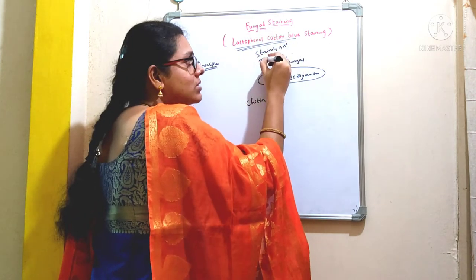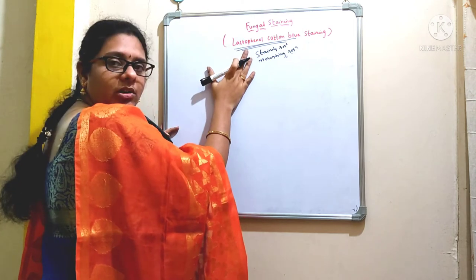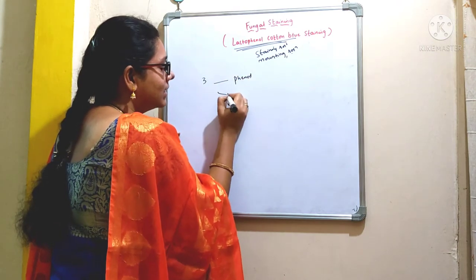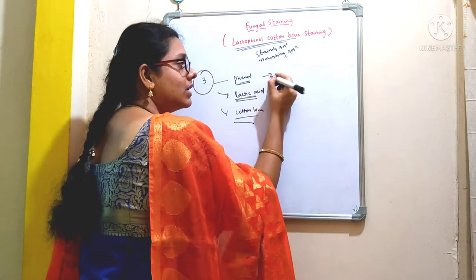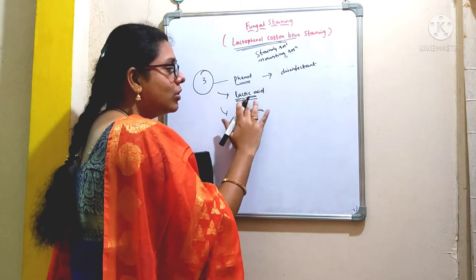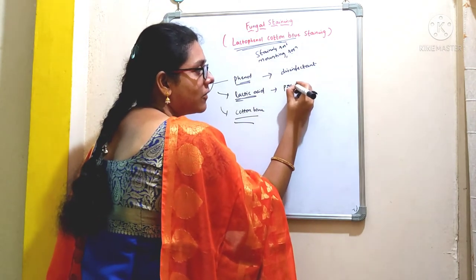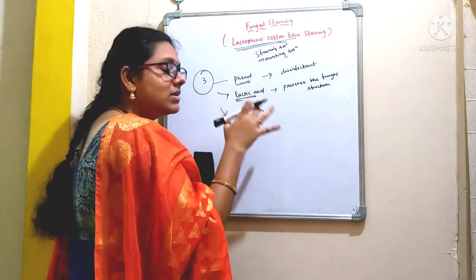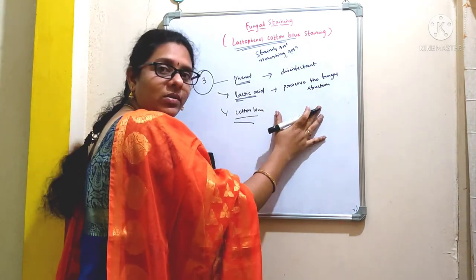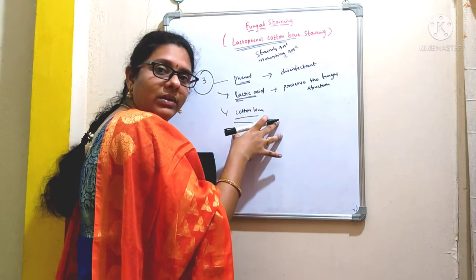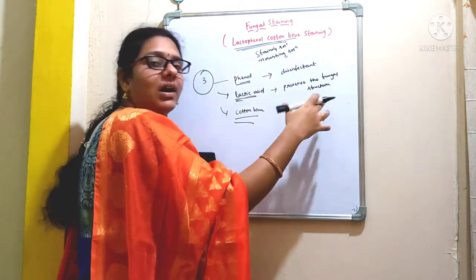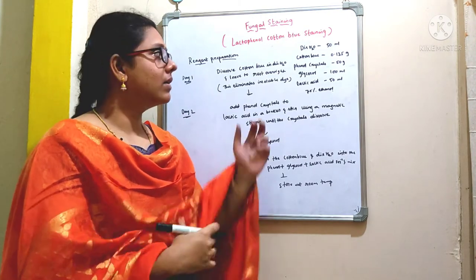Lactophenol cotton blue is mainly composed of three ingredients: phenol, lactic acid, and cotton blue. The phenol is used as a disinfectant, which is going to kill any living organism. The lactic acid is going to preserve the fungal structures. The role of cotton blue is to stain the fungal organism — it gives characteristic color to the chitin present in the cell wall of fungi, and it stains the other fungal structures as well.